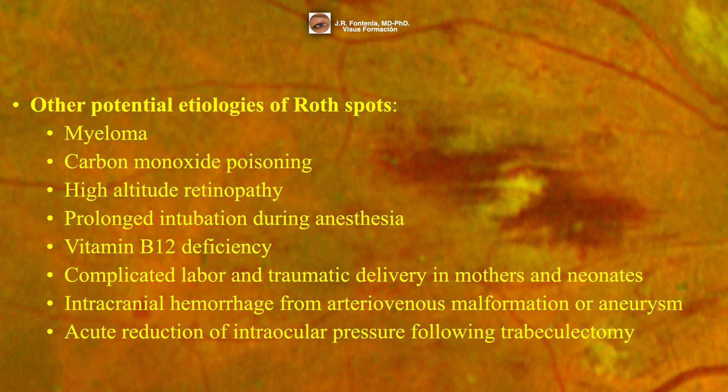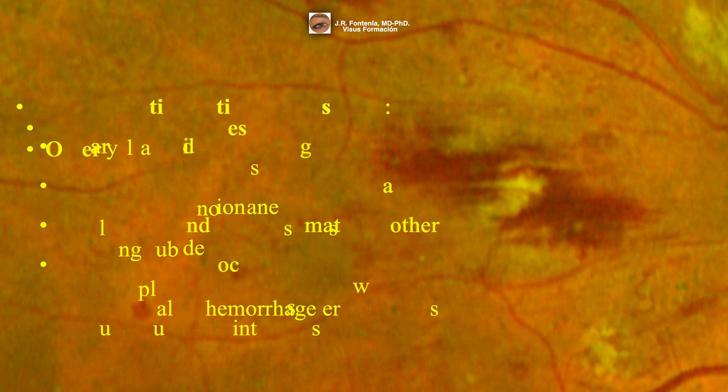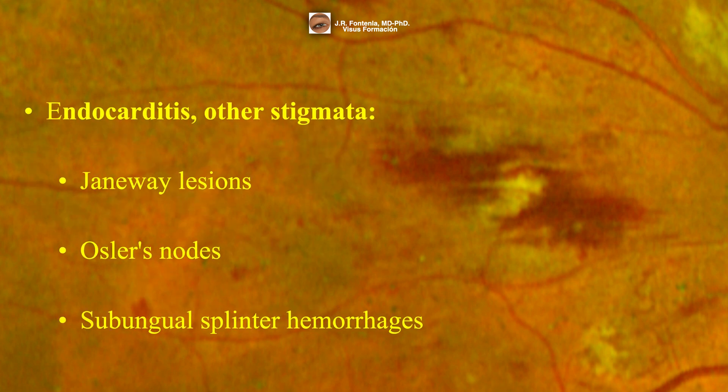Other potential etiologies of Roth spots are listed here. In patients that present with concerns for endocarditis and Roth spots, the clinician must carefully examine for other stigmata of endocarditis, including Janeway lesions, Osler nodes, and subungual splinter hemorrhages.